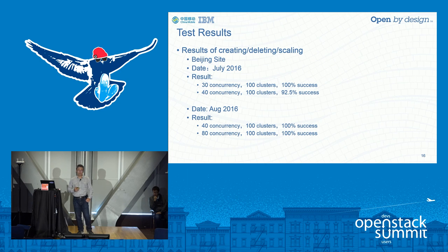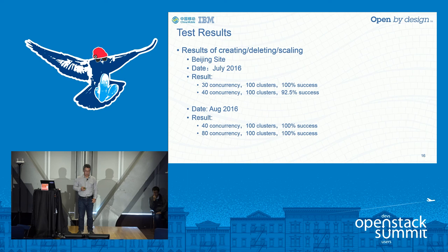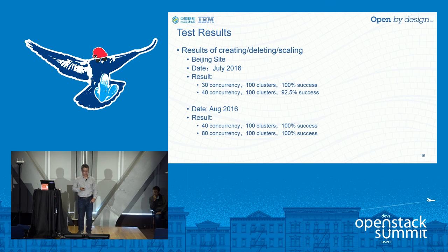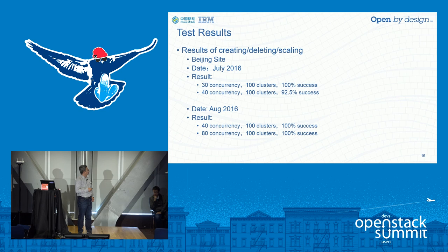After all these optimizations, we finally got some results. These are preliminary results from a non-production environment — the production environment was already online when we ran these experiments — but they still give a useful indication. Back in July we still had low concurrency and failures, but after one month of work things improved significantly.